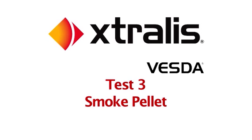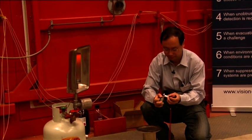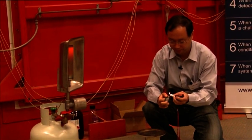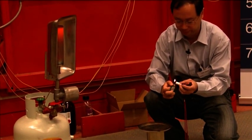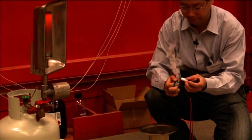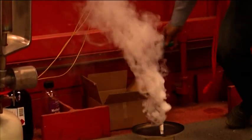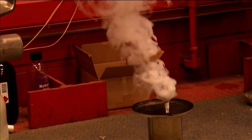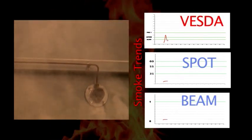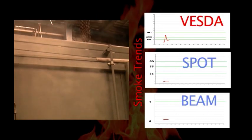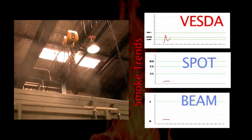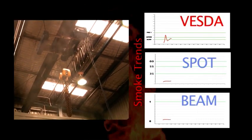Smoke pallet. Test number three is conducted to AS standards and consists of a small three-gram smoke pallet, assisted by a radiant heater to provide a constant heat release rate. Here, the VESDA unit went into alert after just seventy-two seconds and fire one after ninety seconds. Both the spot detector and beam detector failed to react within the eight-minute period.